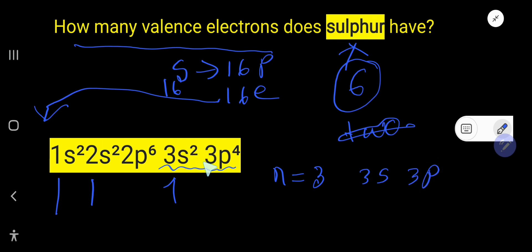We know that the electrons in the outermost shell are called valence electrons. So, here we are getting 2 plus 4, that is 6 valence electrons.